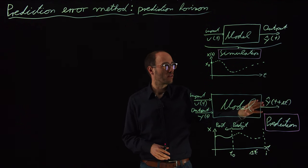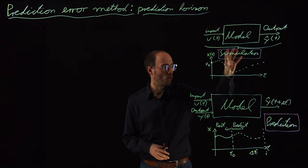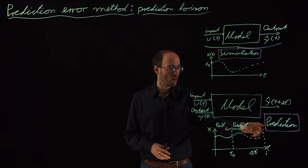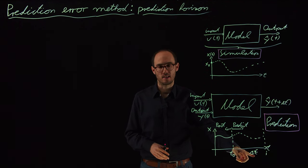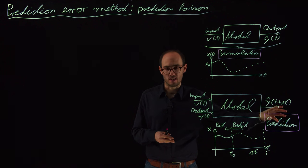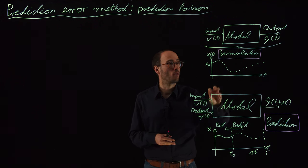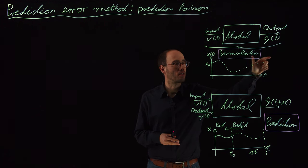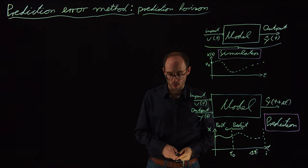Therefore, we can consider the simulation case more or less as a special case of the prediction case, because we can basically set delta T to the entire simulation length of the entire data set. In this case, the prediction scenario would basically converge to the simulation case where we know that we need to predict the entire trajectory over time.